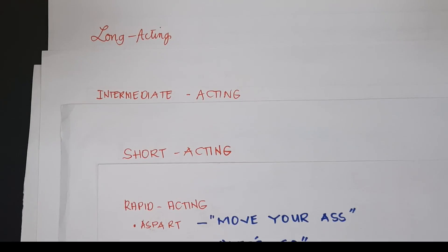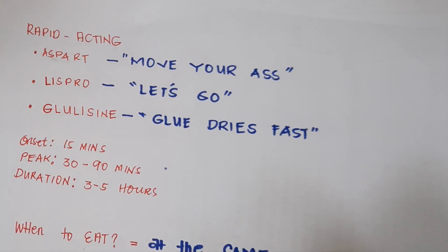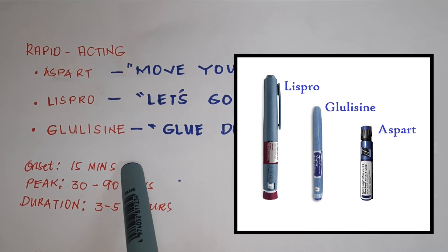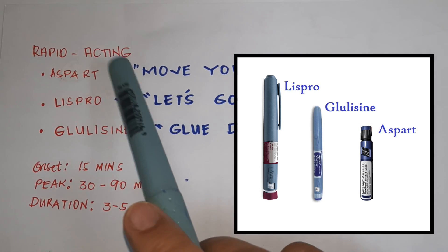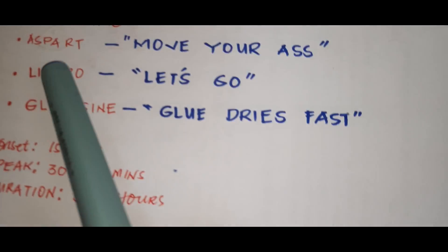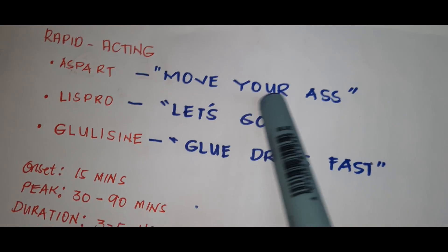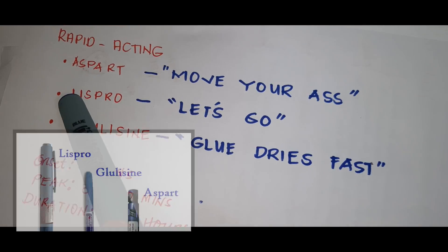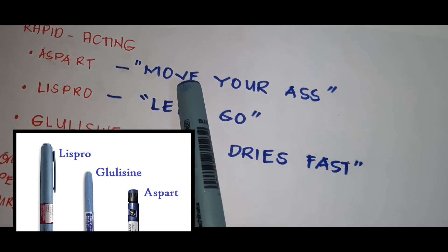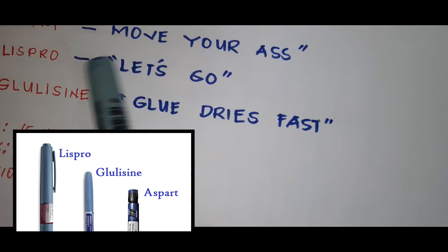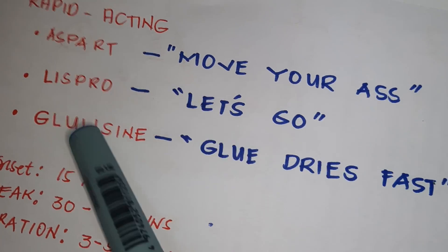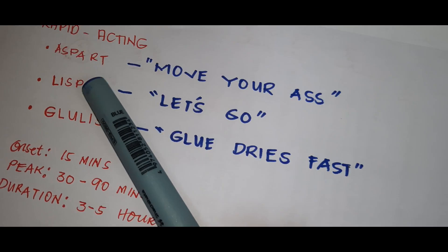Let's start with rapid acting insulins. We have three — ALG: aspart, lispro, glulicine. To remember aspart, think 'move your ass as fast' — aspart. For lispro, think 'let's go, lispro, let's go.'